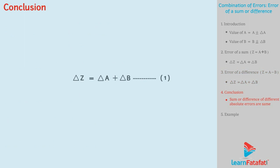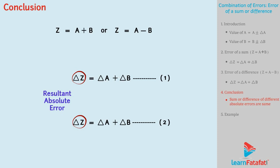From equation 1 and equation 2, we can conclude that when two quantities are added or subtracted, the resultant absolute error in the final result will be the sum of individual absolute errors of different quantities.